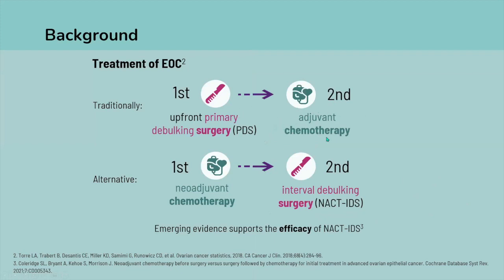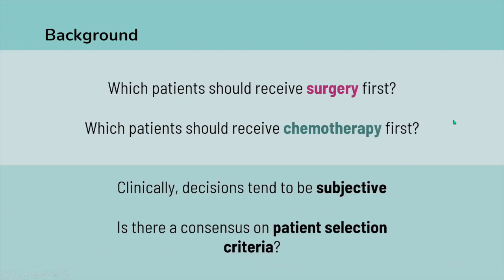The treatment of EOC traditionally involves surgery first — patients receive upfront or primary debulking surgery followed by adjuvant chemotherapy. More recently, an alternative has emerged where patients receive neoadjuvant chemotherapy first and then interval debulking surgery — the NACT-IDS pathway. Emerging evidence supports this pathway's efficacy, but the question remains as to which patients should receive surgery first and which should receive chemotherapy first. Clinically, these decisions tend to be fairly subjective, based on gut feel.